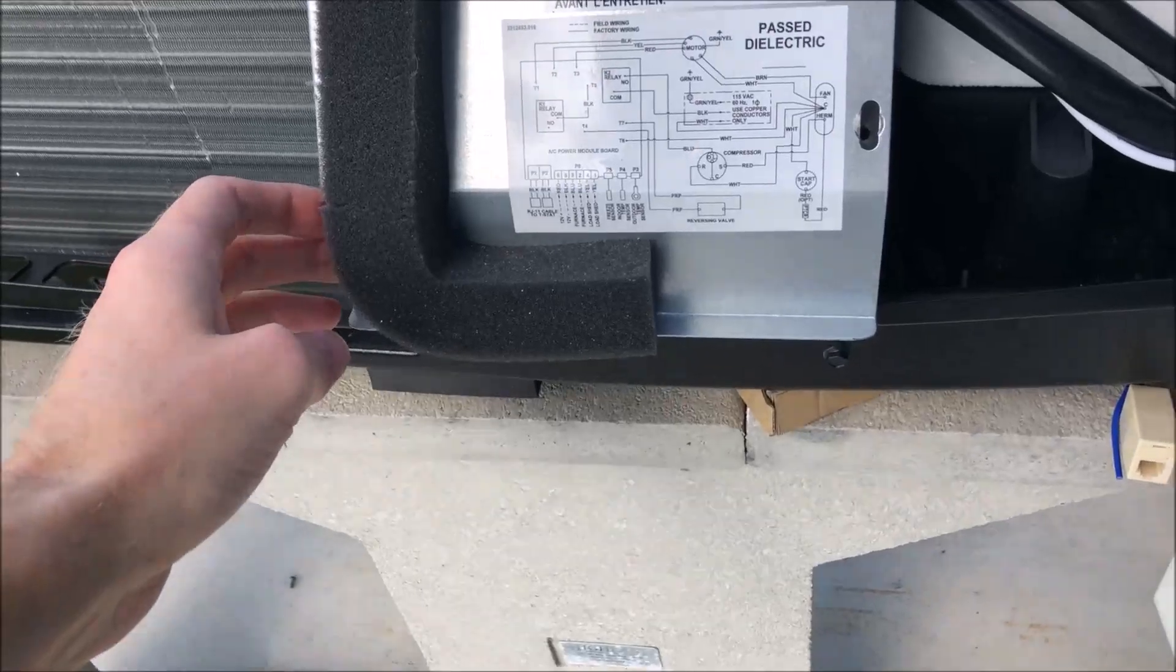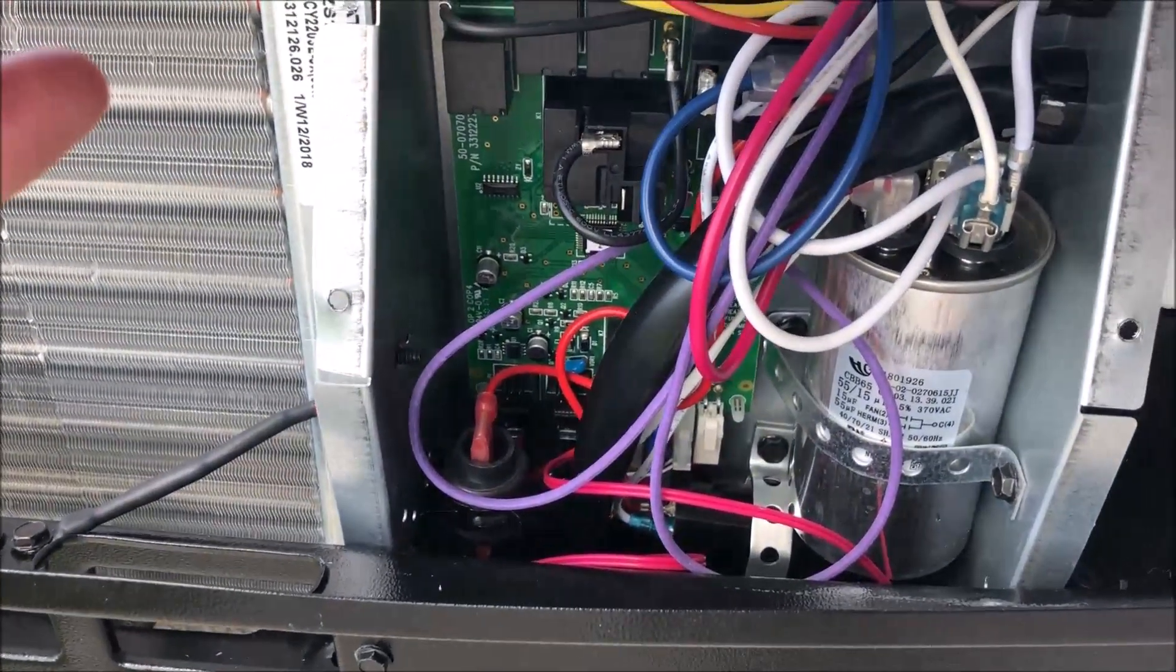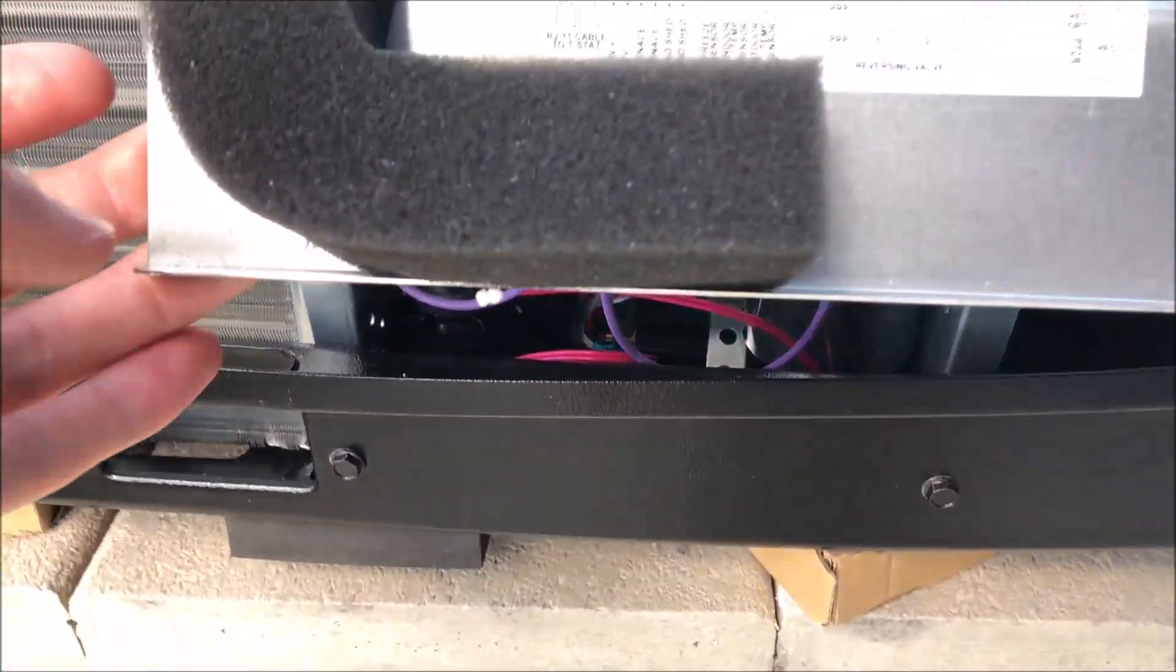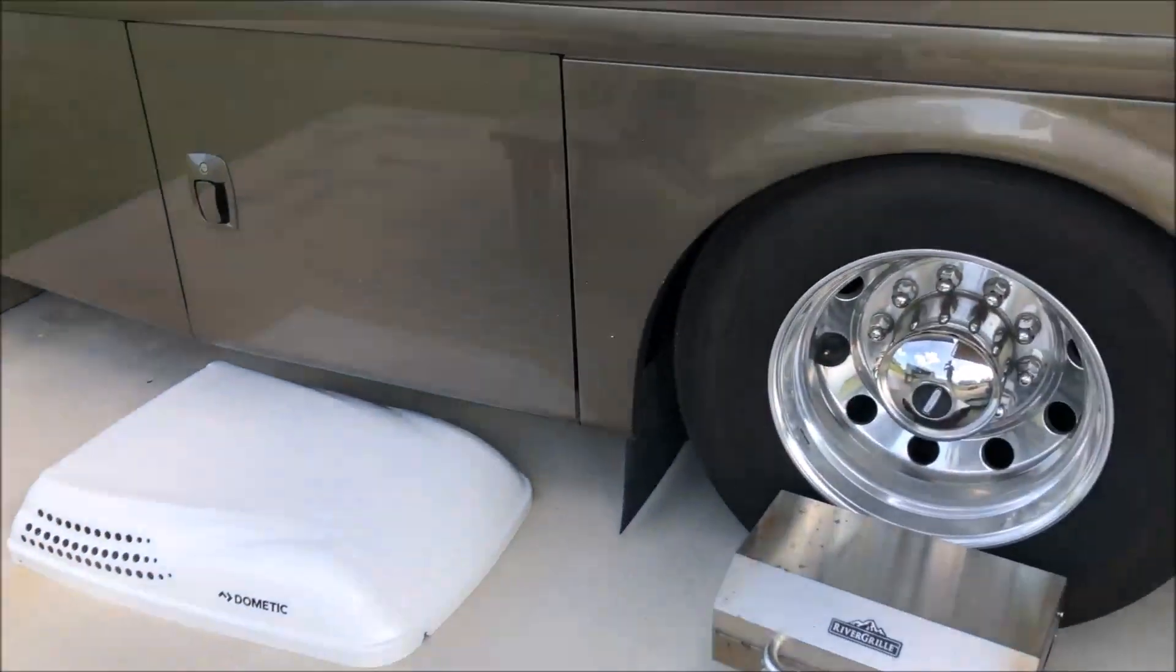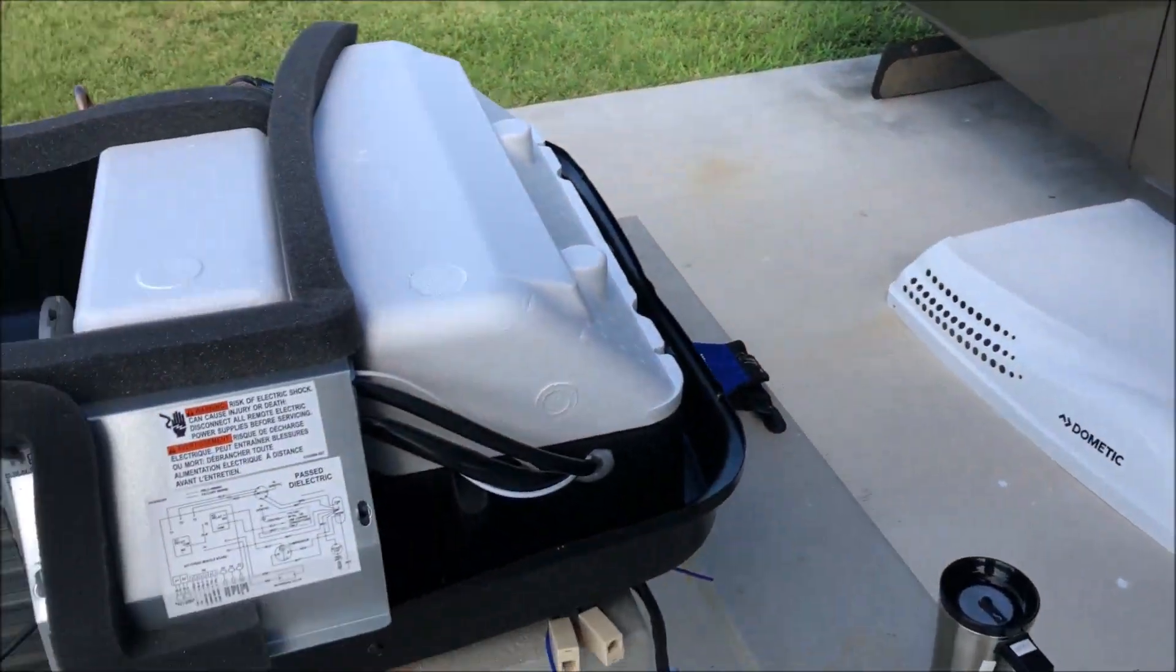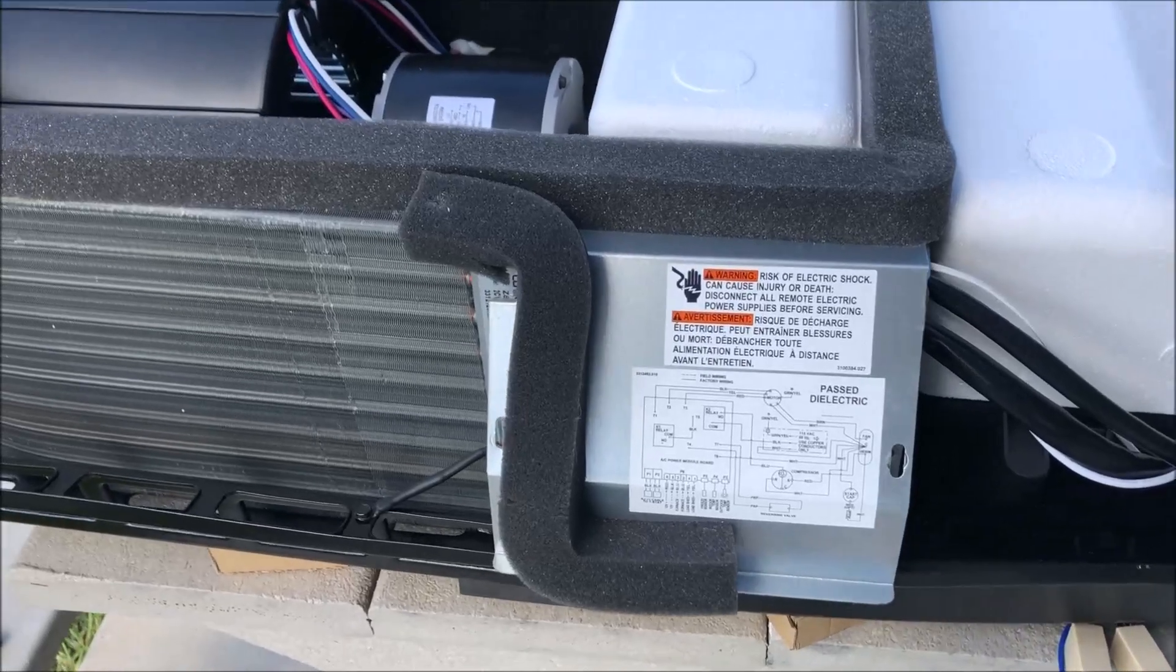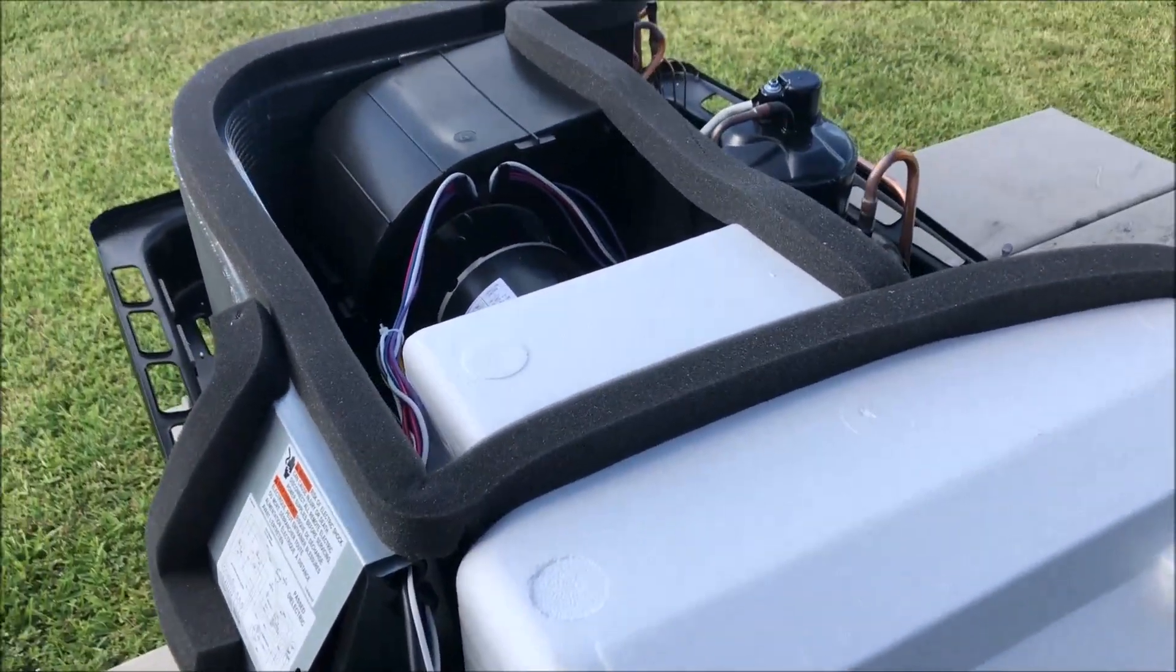And the first step we have to do is swap out this control board on the side because Dometic has switched from a five button to a twelve button. Only this rig has a five button, so we're going to swap out this control board to make sure that it can work with a five button thermostat.